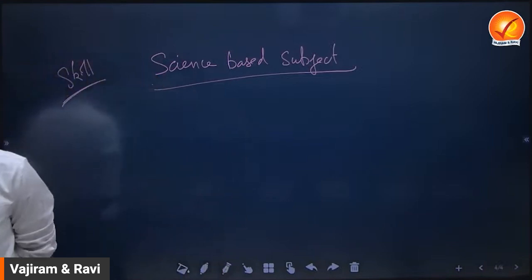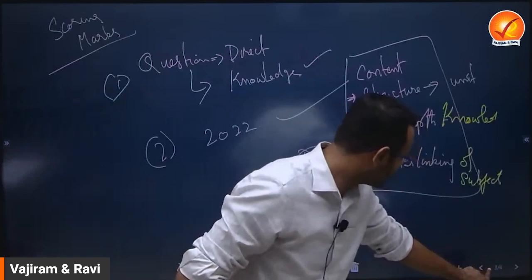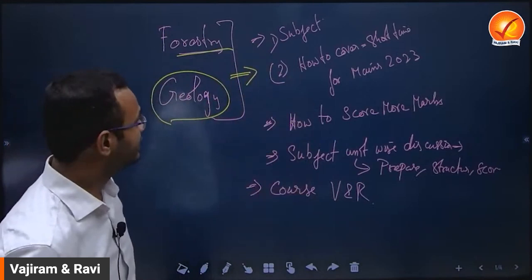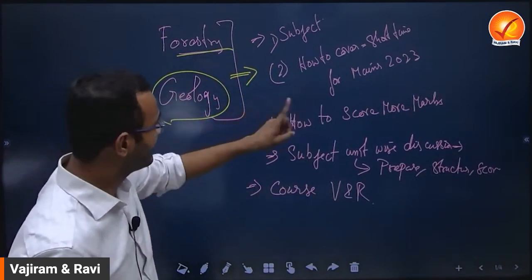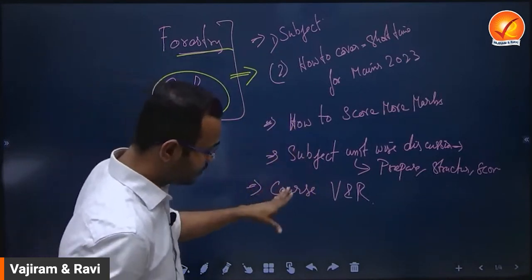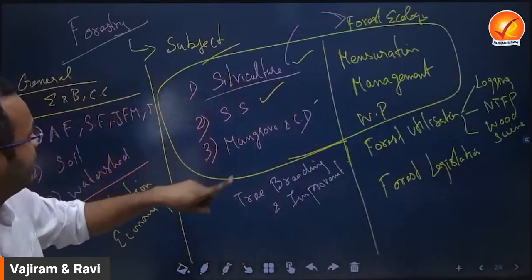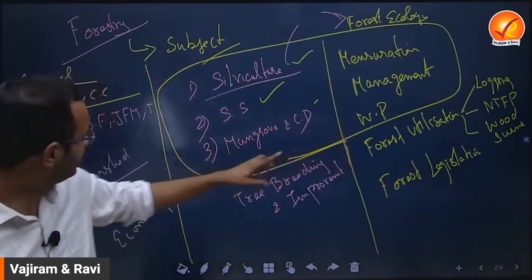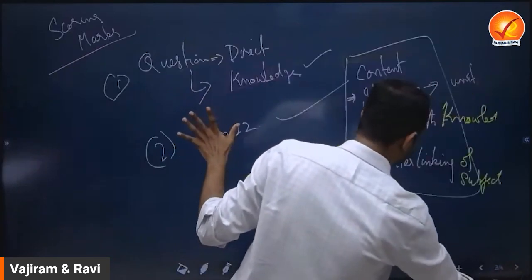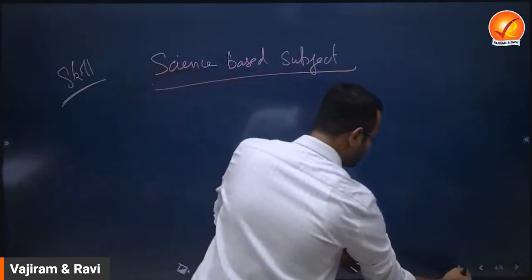So to summarize, we discussed the syllabus, core areas, allied areas, how much importance each needs, and how to score marks. Moving on to course details: for forestry, we have two courses — one classroom program and one test batch. The test batch is for people who have already prepared. The classroom program will include close to 70 hours of class, covering 180 to 190 marks out of 200.